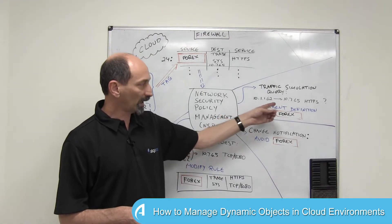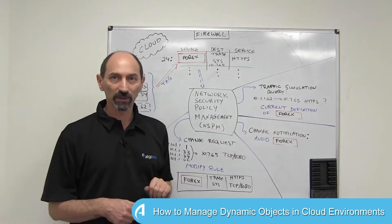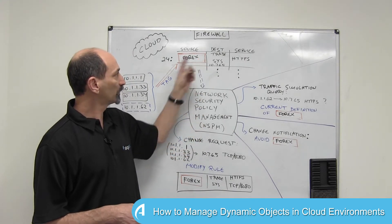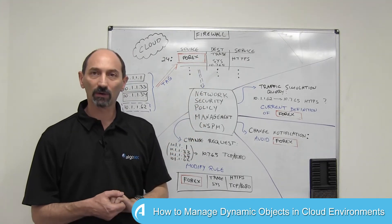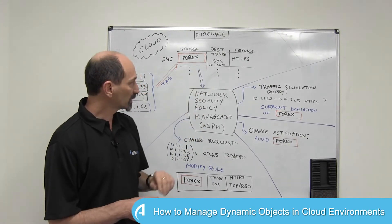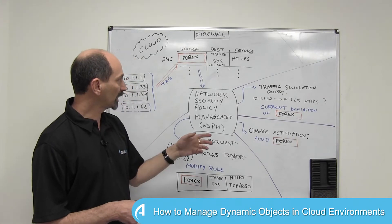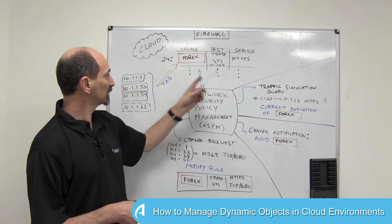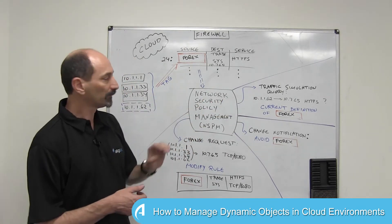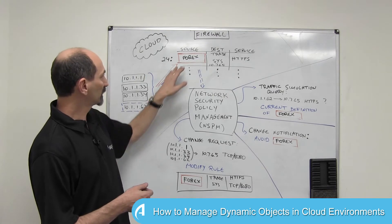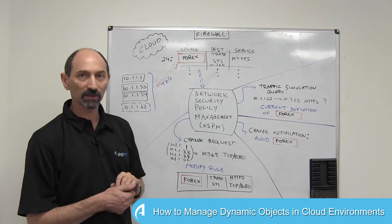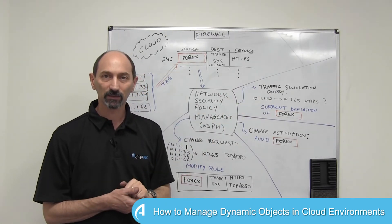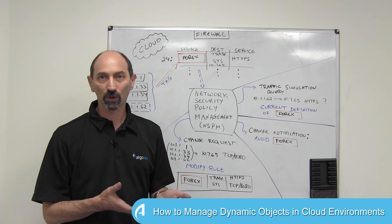In order to answer this query, the NSPM needs to know the current definition of the Forex object so that it can realize that the IP address listed is actually not one of the three covered by the tag Forex right now. Therefore, the answer to this query at the moment is no.